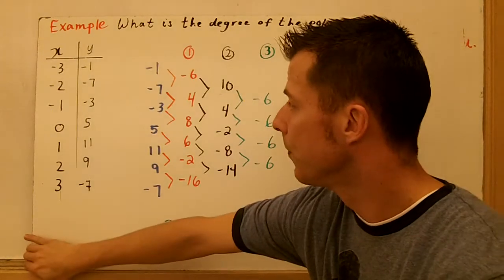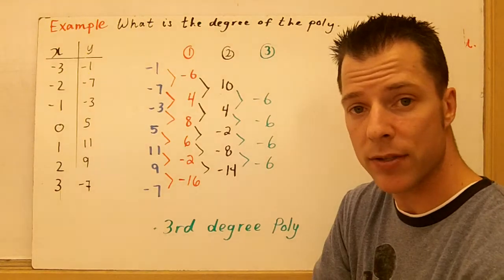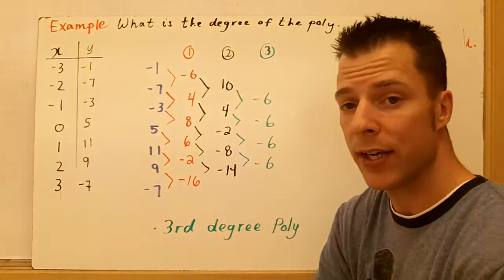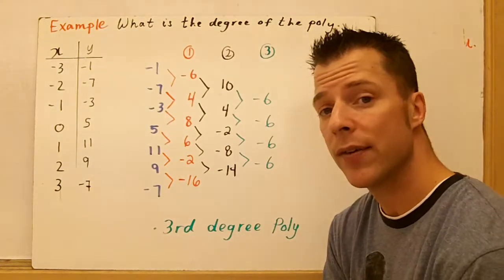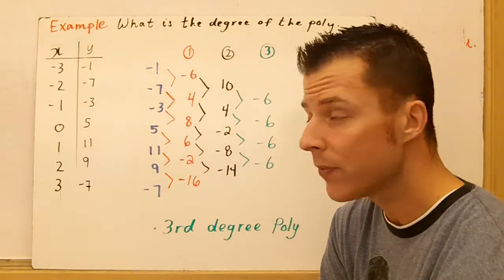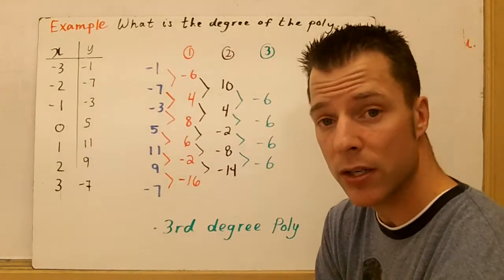Last example here. What is the degree of the polynomial? This is what we mean by finite differences. I've got a table of values, and I need to find the end behavior. Maybe I don't have a graphing calculator. We know we can find the degree by looking at the differences of the y coordinates.